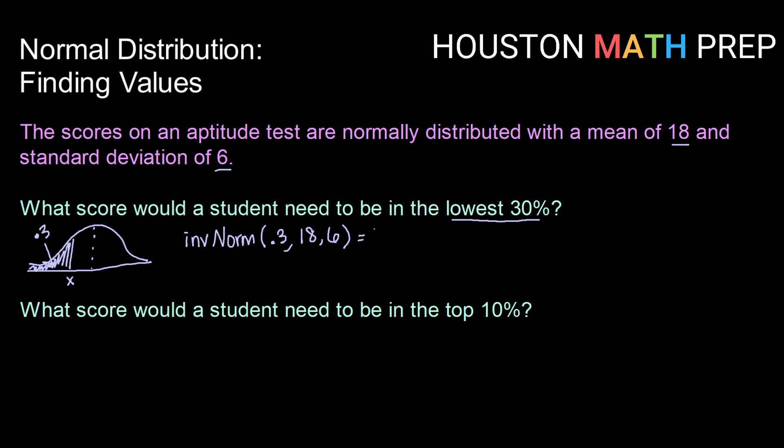we get a value of 14.85. So a student scoring a 14.85 or below would be in the lowest 30% of scores on this aptitude test.